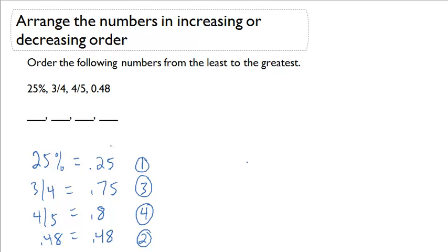Now I want to write these in order in their original forms. So first I'm going to write 25%. Second is 0.48, which stays as 0.48. The third choice I listed below is 0.75, which was 3 over 4. And my last number, 0.8, which was 4 over 5.